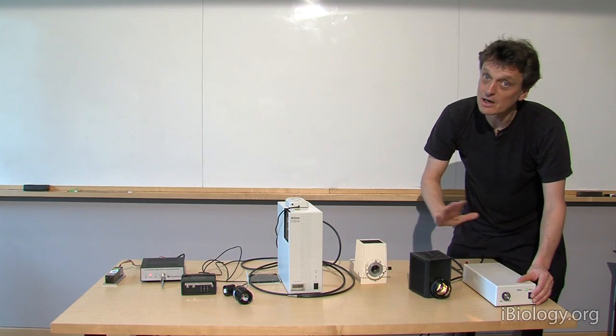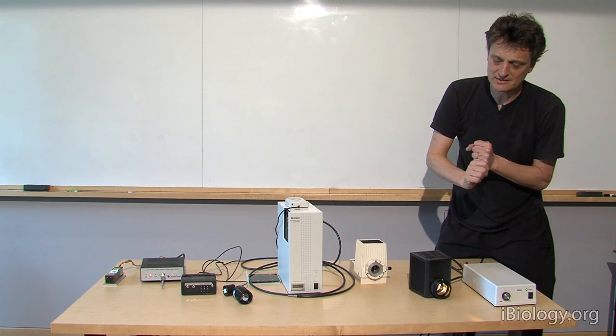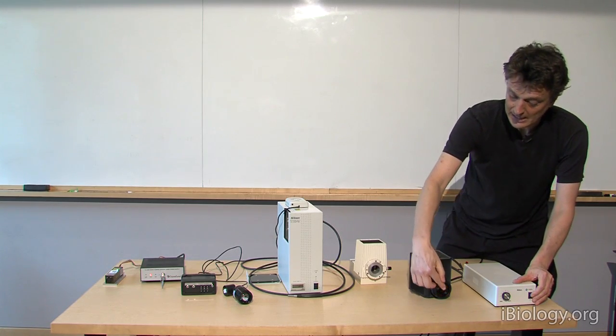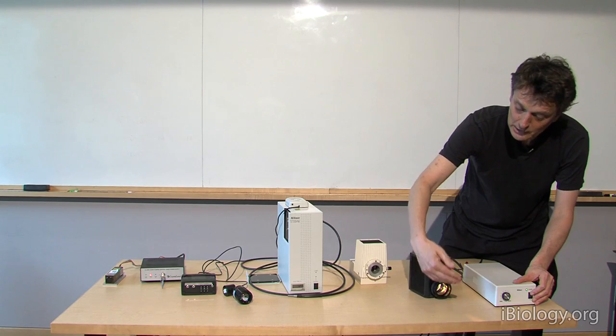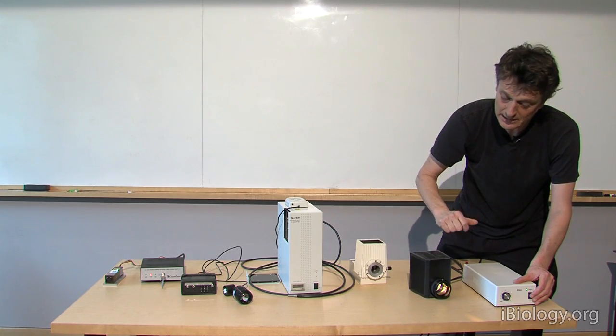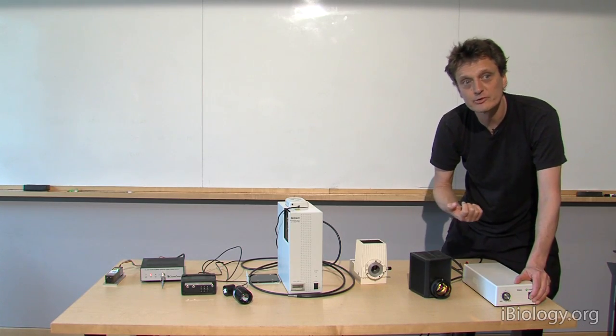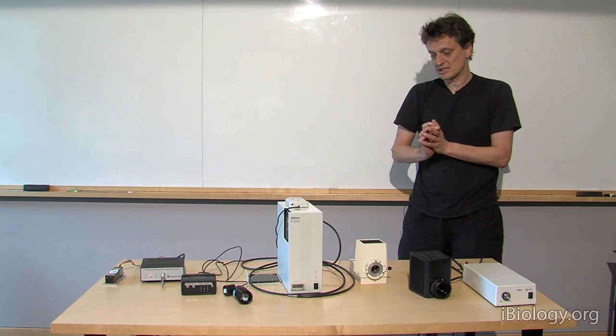Now halogen lamps are nice for transmitted light illumination. They have two disadvantages. One is that as you see, it takes quite a bit of time for the light to come on. It doesn't switch on momentarily. And the other thing is that it doesn't get super bright. And for things like fluorescence, we really want brighter light sources.